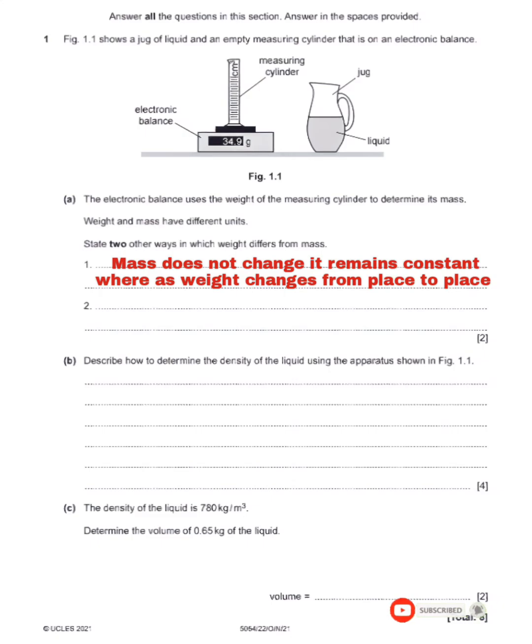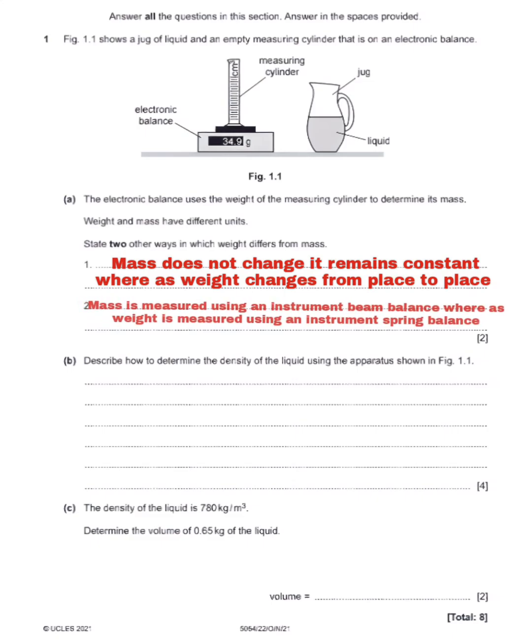For the second difference, mass is measured using an instrument called a beam balance, whereas weight is measured using a spring balance. Alternatively, you can say: mass is the quantity of matter contained in an object, whereas weight is the pull of gravity on an object.